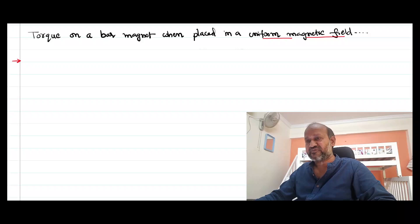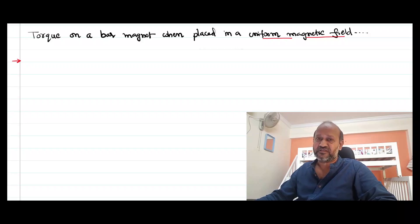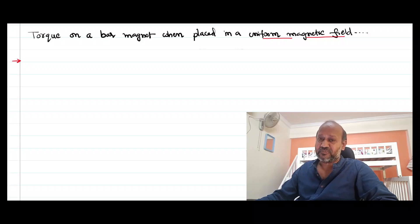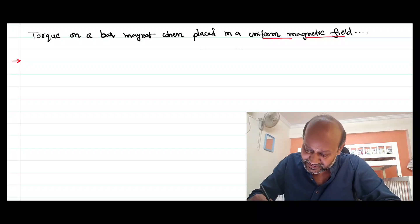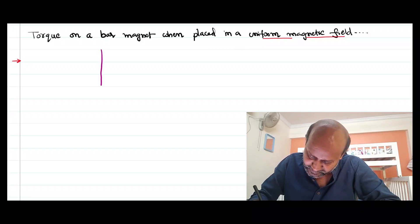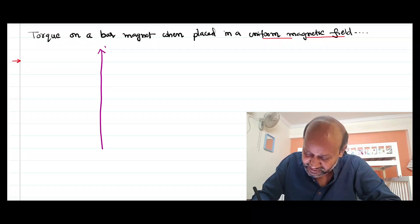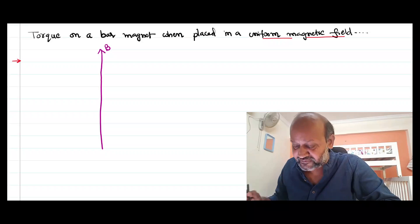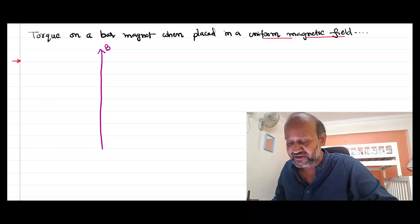Hello everyone. In this video we are trying to derive an expression for the torque experienced by a bar magnet when placed in a magnetic field. So let's imagine a uniform magnetic field first of all. I am just taking an arbitrary direction — let that magnetic field of field strength B be in that direction.